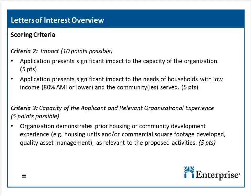Criteria 2 evaluates the possible impact of your proposed activities — both how they would significantly impact your organization's capacity, and how those proposed activities would impact the needs of the people you serve. Criteria 3 scores the applicant's capacity and prior organizational experience as it relates to proposed activities. Organizations should mention past housing and community development experience, such as housing units and square footage developed.